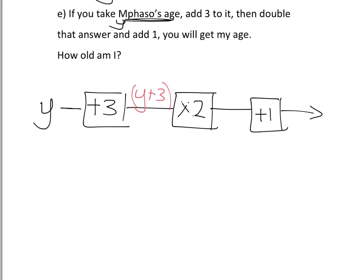You then need to multiply that whole thing there, that y plus three, that whole thing there. You need to multiply that by two. And so what you're going to come out with is two lots of y plus three. And then at the end of that, you're going to add one on to that thing. So you're going to get 2(y plus 3). And then you're going to add one onto that whole thing. And there is our answer.